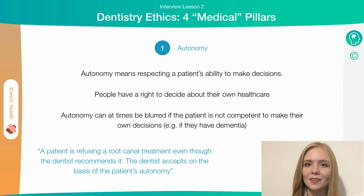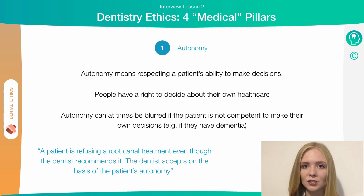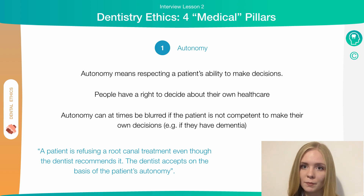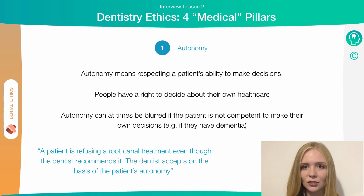The first pillar is autonomy, and this means the ability to make decisions for yourself, including in healthcare. It can get a little bit blurred when you talk about patients who have conditions which make it more difficult for them to make decisions. In this situation you'd have to consider on an individual basis whether the patient is competent enough to make the decision or not. In general, if a patient is competent enough to make a decision then you need to respect their autonomy to say yes or no to accepting dental treatment. For example, in an interview you might get a scenario where a dentist is recommending a treatment to a patient and they don't want it — you must respect their autonomy in allowing them to say no.